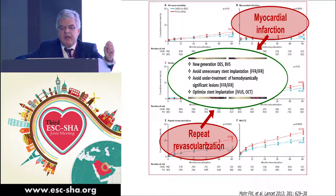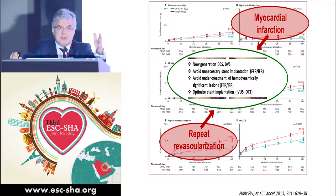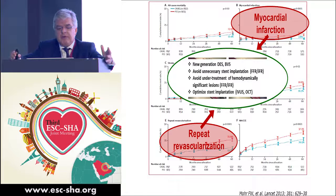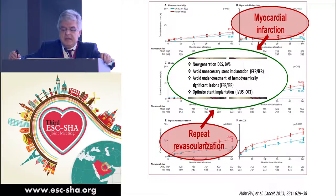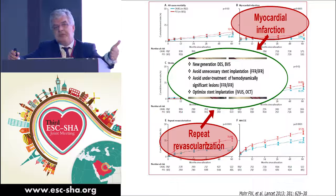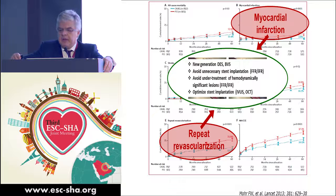The main question here is: how can we use new technology, and particularly imaging technology, considering we now have new-generation drug-eluting stents? We just saw beautiful examples also of BVS. How can we avoid unnecessary stent implantation? The use of functional assessment with FFR and iFR has helped us to better select patients, and also how to avoid undertreatment of hemodynamically significant lesions by hemodynamic assessment. The topic of this discussion is how can we optimize stent implantation to reduce repeat revascularization and reduce the number of patients who develop stent thrombosis or acute coronary syndromes.